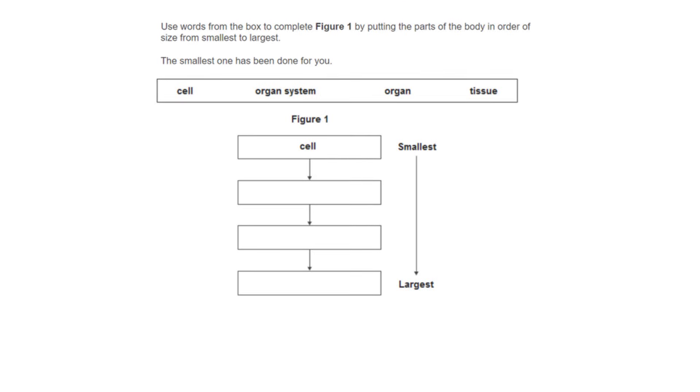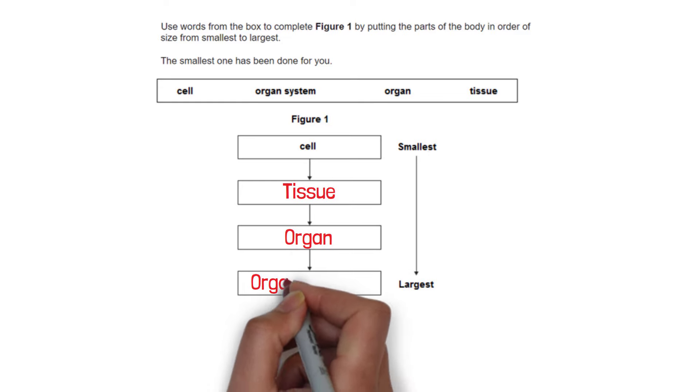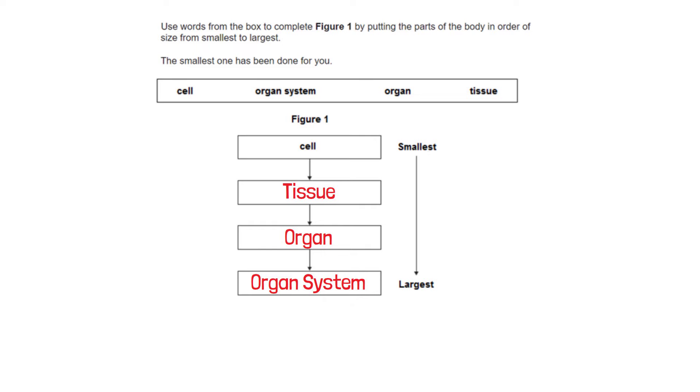The next question is asking us to put the words that are in the box in order from smallest to largest. The exam paper is expecting you to know that a group of cells make a tissue, a group of tissues make an organ and a group of organs make an organ system.